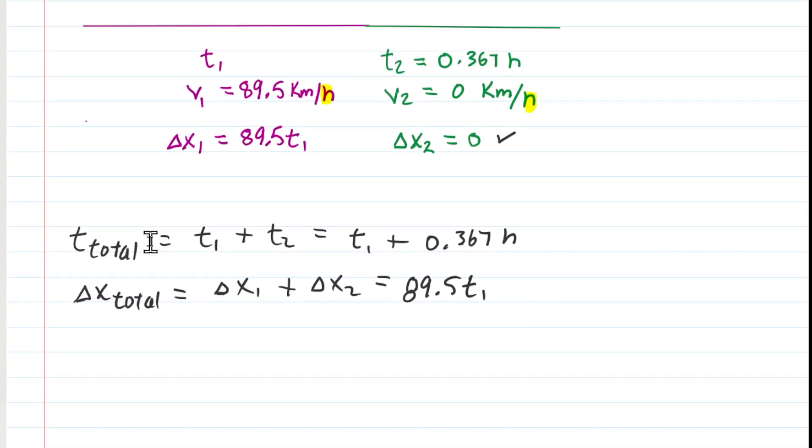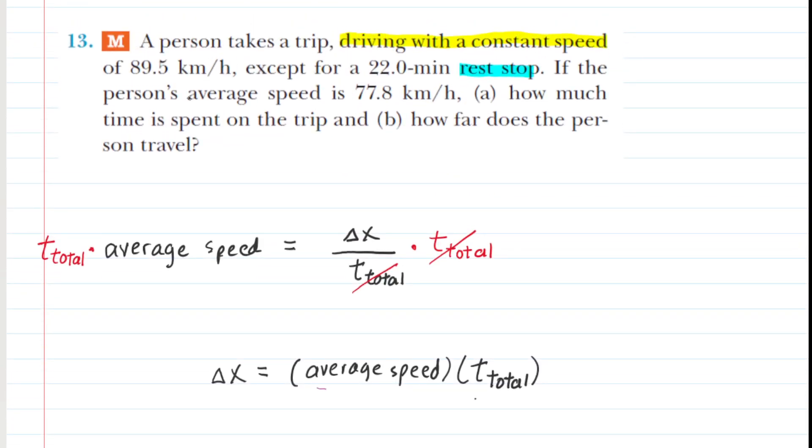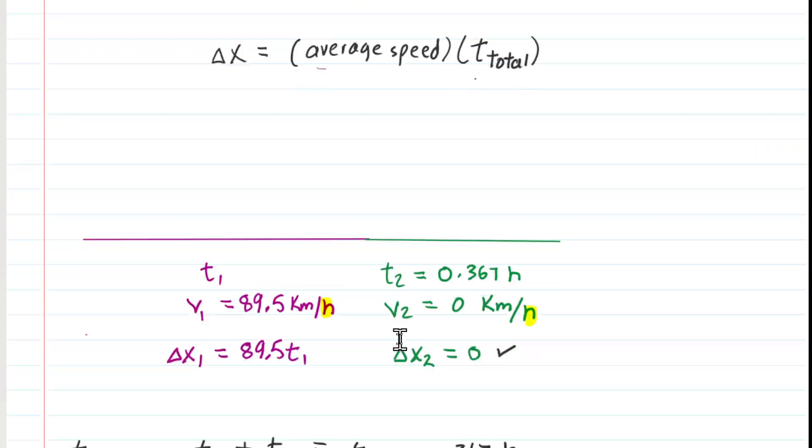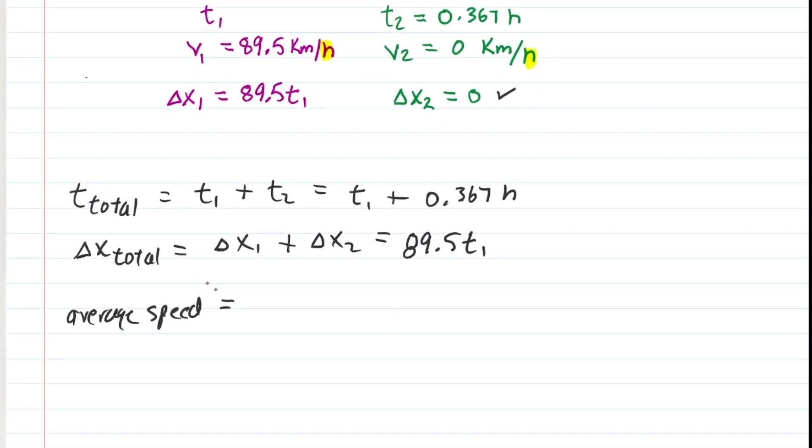Now the other thing we know for the entire duration of the journey was the average speed. The question noted what that value was for the entire journey. Let's go back up to the problem and just check that out. The average speed for the entire journey was 77.8 kilometers per hour. So we're going to go ahead and fill that in. 77.8 kilometers per hour.